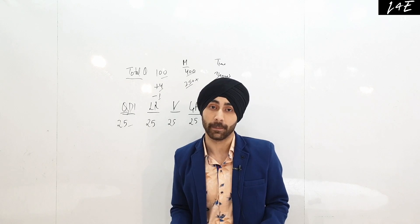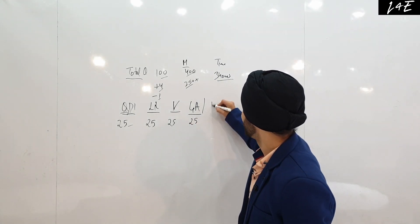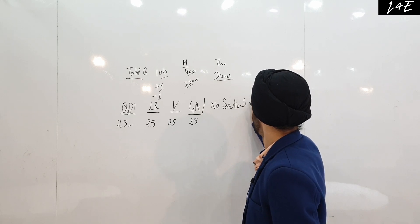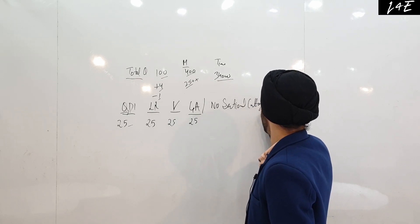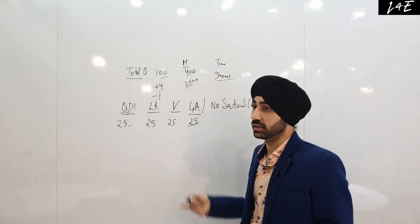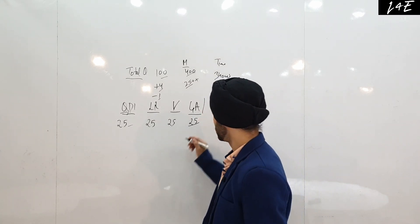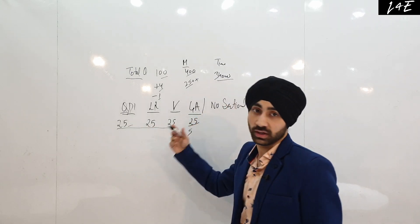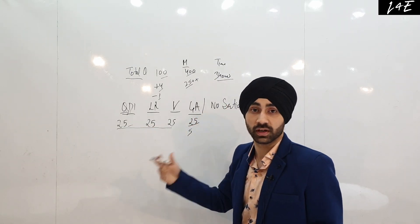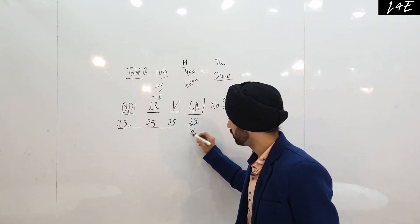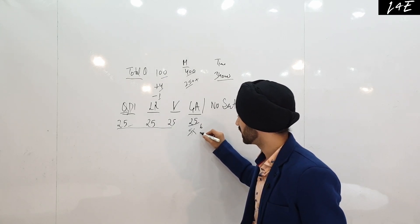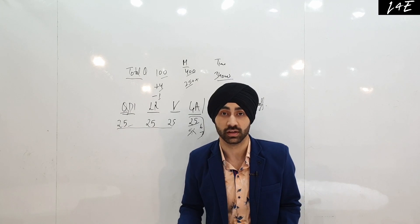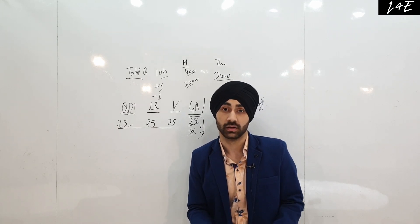There is no sectional cutoff in CMAT. So even if you have scored only 5 in GK but scored very well in the rest of the sections, you don't need to worry about a sectional cutoff at all.